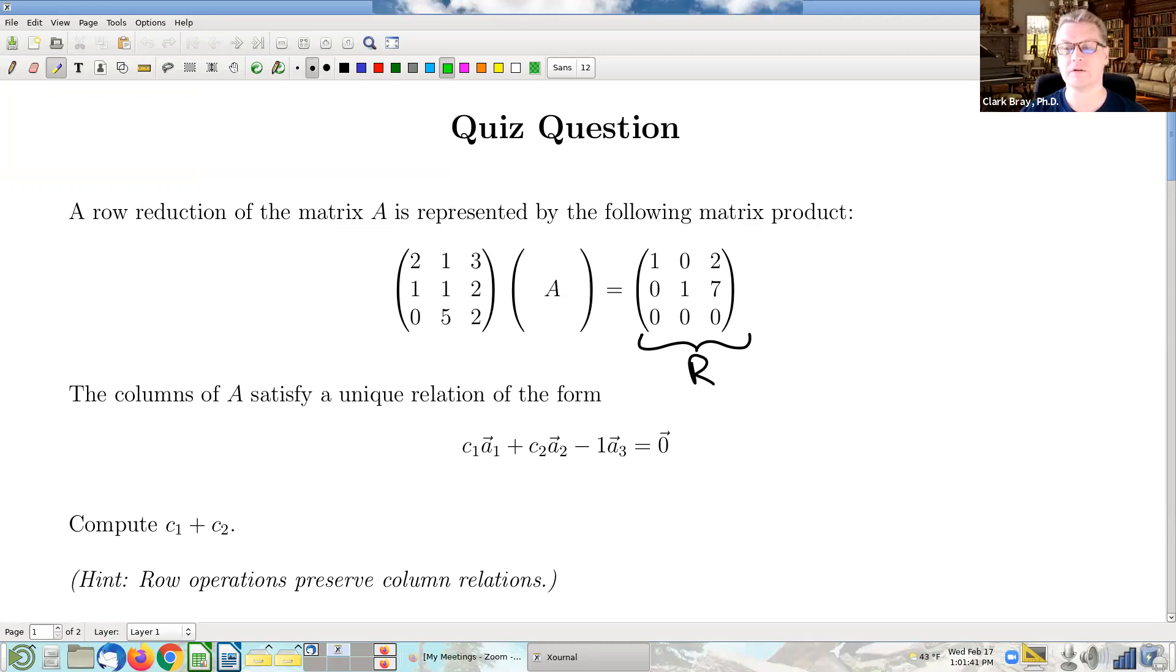So we're going to start with a quiz question from an earlier offering of this course. Of course, we don't give quizzes in this offering of the course, but here it is, a quiz question from the past. And let's just take a look at it. So the question says that we're representing a row reduction of a matrix A by the following matrix product. And so before we go on, let's remind ourselves what that means.